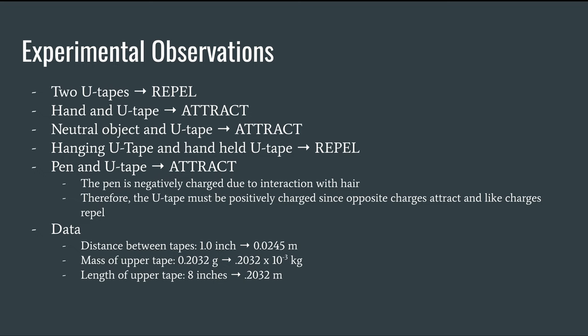A pen and U-tape would attract. The pen was negatively charged by being rubbed in hair. Now this means if they attract and the pen's negative, the U-tape must be positive because opposite charges attract. And below here we have a little bit of data. Those are our measurements that go into our code, which we'll see later.